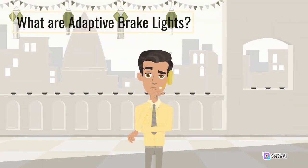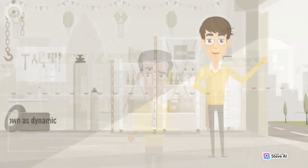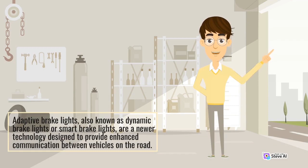What are adaptive brake lights? Adaptive brake lights, also known as dynamic brake lights or smart brake lights, are a newer technology designed to provide enhanced communication between vehicles on the road.